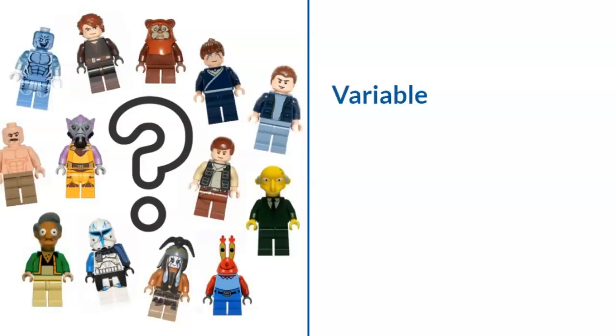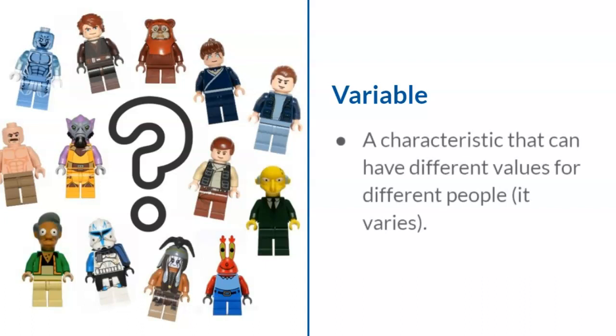What comes up for you when you hear the word variable? The root word is vary, or to be different from something else. Like in this photo of different types of Lego minifigures or Lego characters, a variable is a characteristic that can have different values for different people. These characteristics vary from person to person.